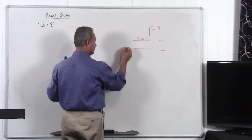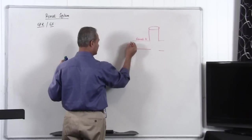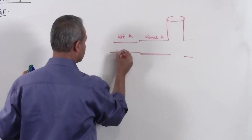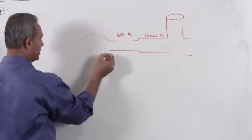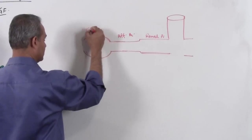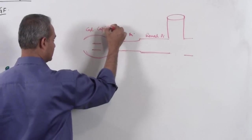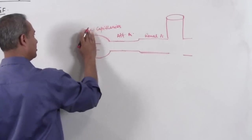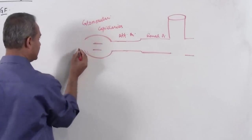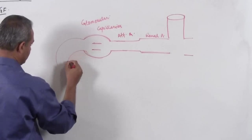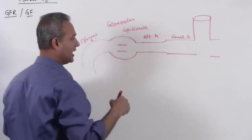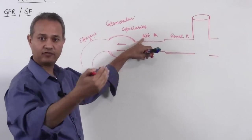So here right from here I will make an afferent arteriole, afferent arteriole which I hope you know becomes divided into glomerular capillaries. So glomerular capillaries, glomerular I will just write it here, then efferent arteriole.